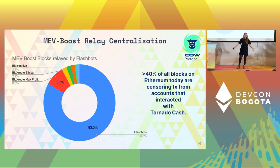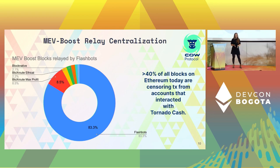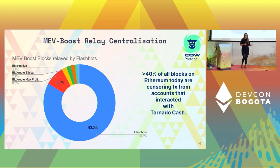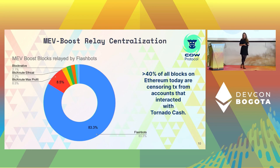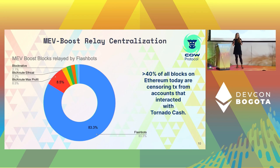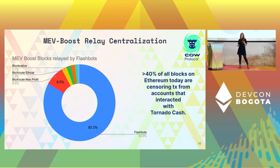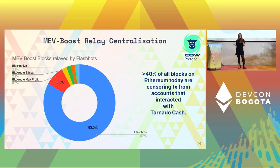The problem arises when one of these relayers decides to start censoring transactions — and this is exactly what Flashbots does today. They are complying with OFAC, the Office of Foreign Asset Control, meaning any transactions from accounts that previously interacted with Tornado Cash are not included in these blocks. With Flashbots at 83% relay share, covering roughly 50% of validators, that means already more than 40% of all blocks on Ethereum are censoring accounts that previously interacted with Tornado Cash.